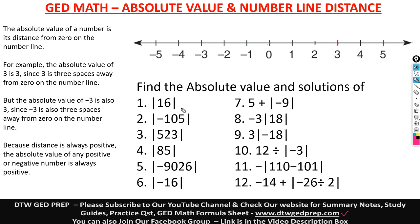Now let's look at these questions — find the absolute value. The absolute value of 16 is still just counting how many spaces from zero, which is 16, a positive 16. The absolute value of negative 105 is a positive 105. The absolute value of any positive or negative number is always positive.